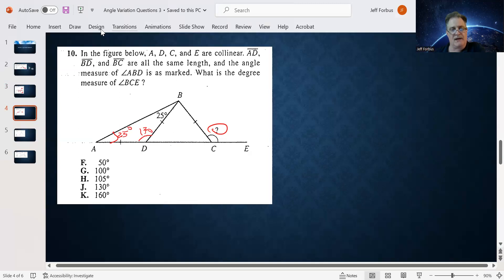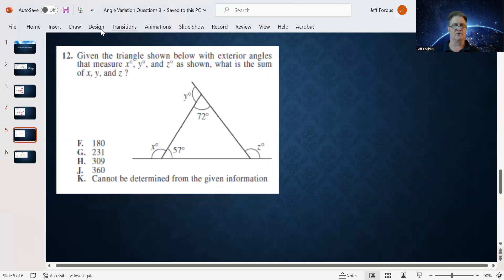If D is 130, then D in triangle BCD has to be 50 degrees. And since BD and BCD are the same, angle C of BCD is 50 degrees. Now we can figure out angle C on the outside of the triangle. Just simply subtract 50 from 180 and that leaves you 130 degrees. And so our answer choice is J.